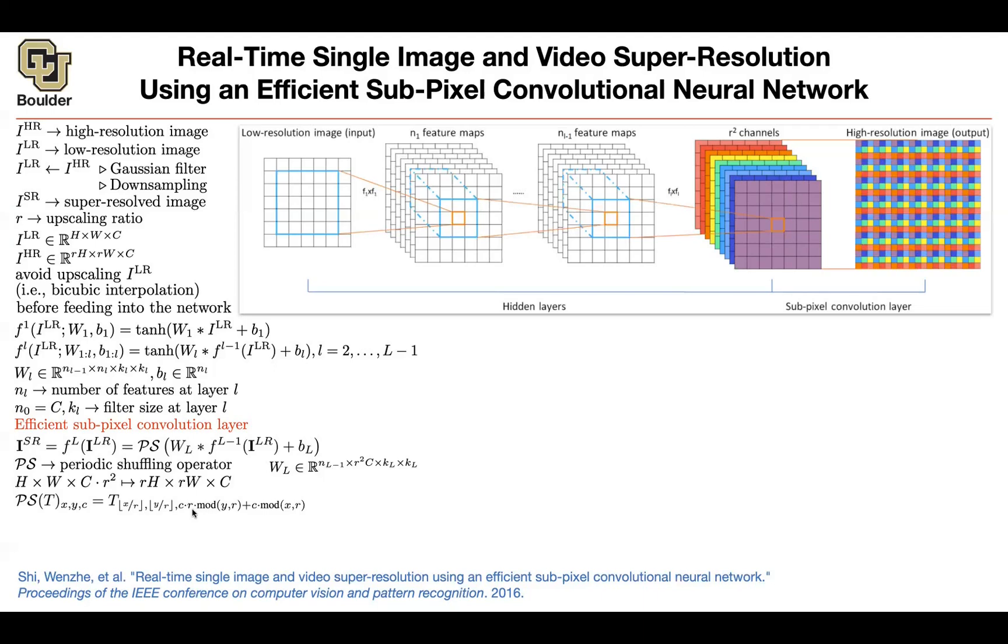You need r² of them - you need r² channels because after the reshuffling you're going to end up with an image that has the same resolution as your original image. So the task of this operation, this last guy, periodic shuffling operation, is to take you from a low-resolution image with r² times channels to a higher resolution image with the exact number of channels that you need in the end, which could be 3.